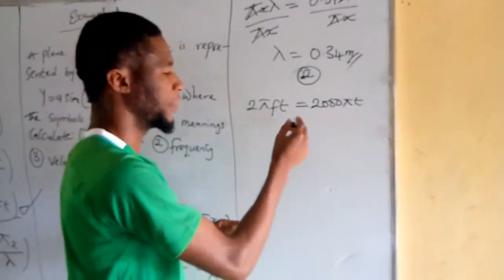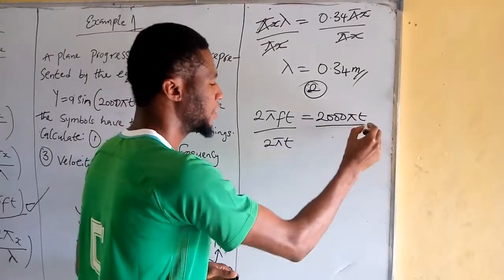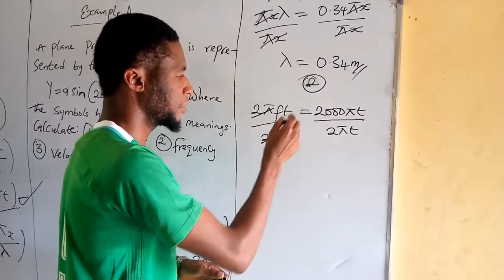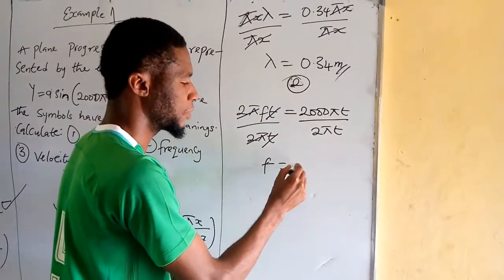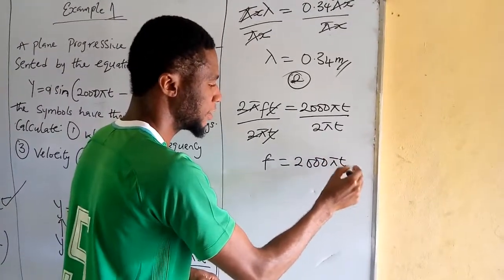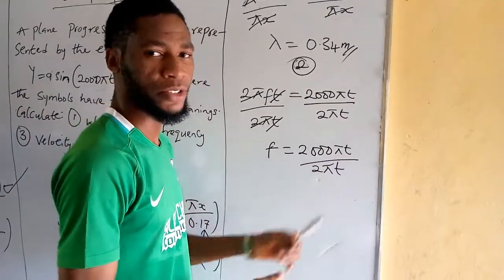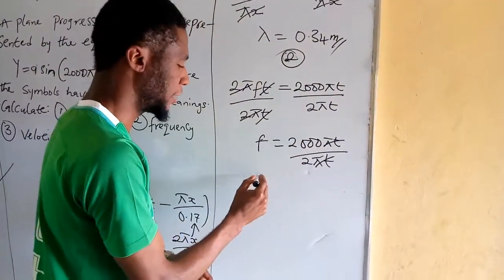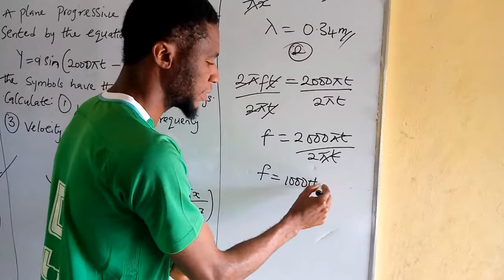Dividing both sides by 2πt, the 2πt terms cancel each other. We have frequency equals 2000πt over 2πt. The π and t cancel, and 2000 divided by 2 gives us 1000. So our frequency is equal to 1000 hertz.